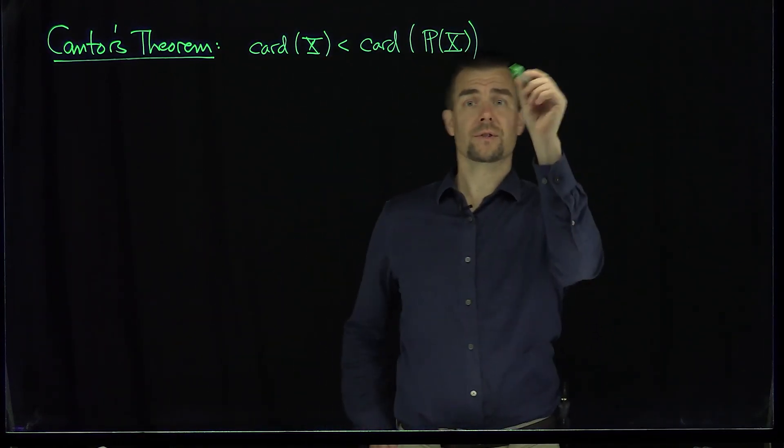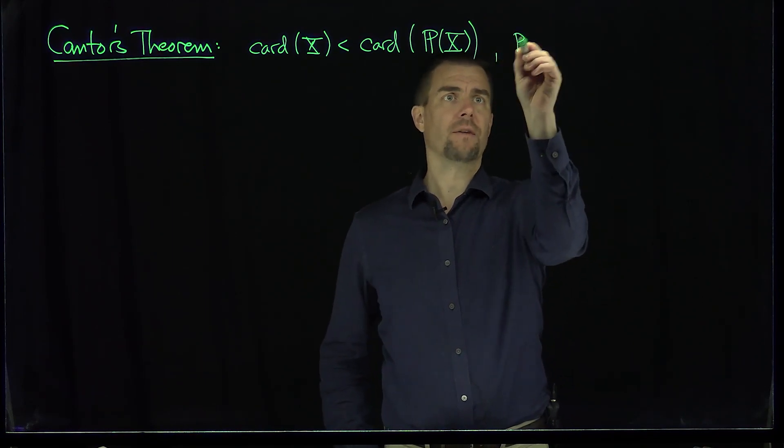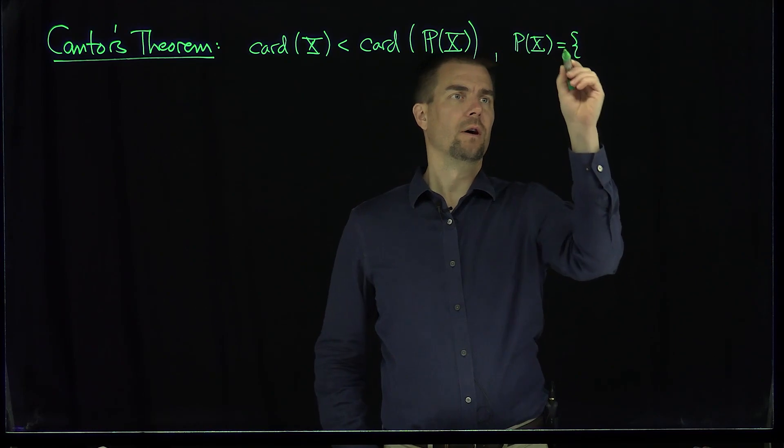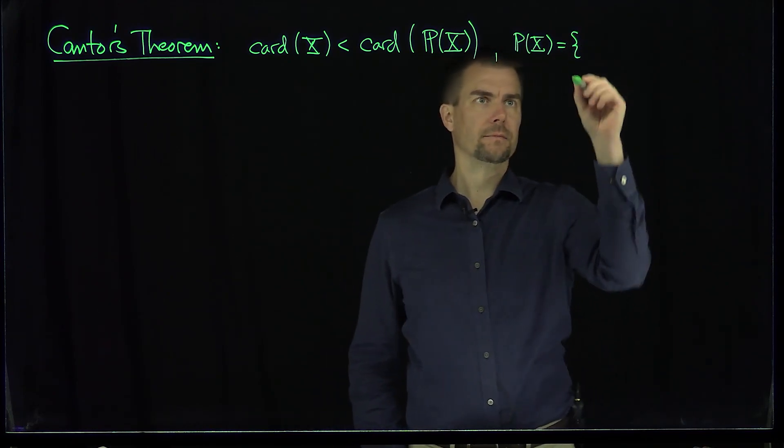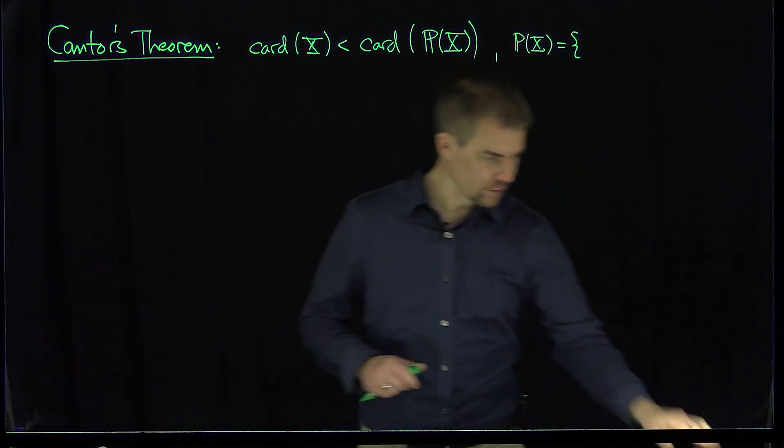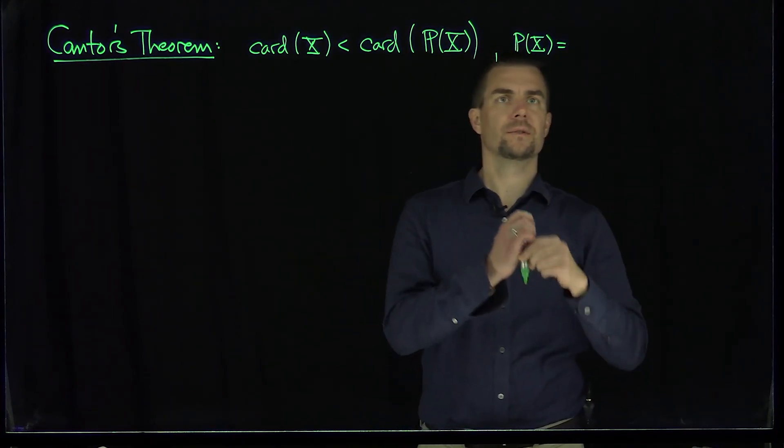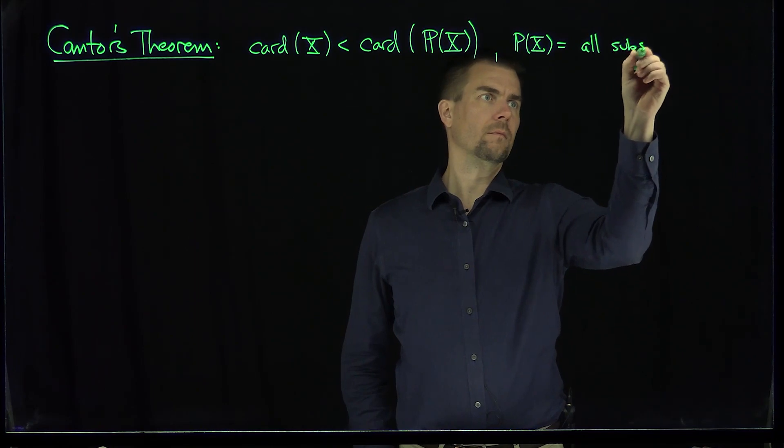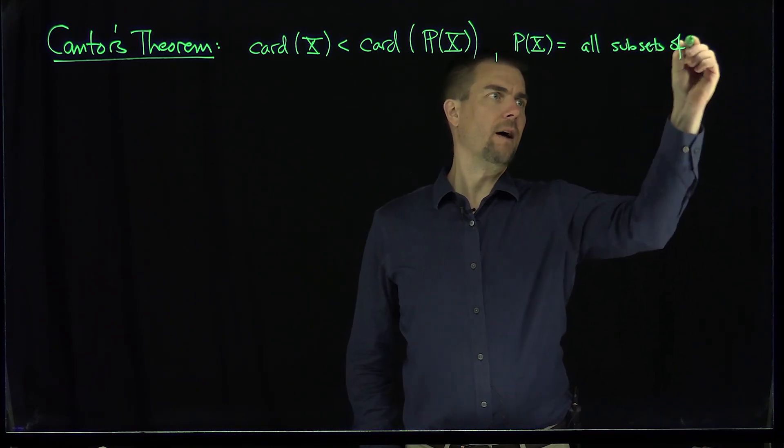Of course here, the power set of X is just the set of all subsets of X. So P of X is the collection of all subsets of X.